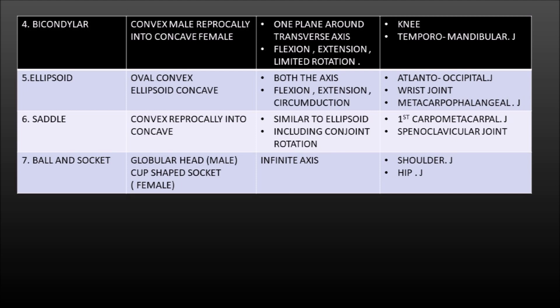Ellipsoid joint: oval convex male and ellipsoid concave female; movement on both axes — flexion, extension, and circumduction; examples: atlanto-occipital joint, wrist joint, and metacarpophalangeal joint. Saddle (sellar) joint: convex surface reciprocally fitted into concave surface; movement similar to ellipsoid but includes conjoint rotation — flexion, extension, and conjoint rotation; examples: first carpometacarpal joint and sternoclavicular joint. Ball and socket joint: globular head (male) in a cup-shaped socket (female); movement on infinite axes; examples: shoulder joint and hip joint.